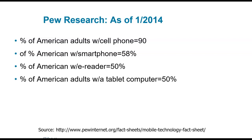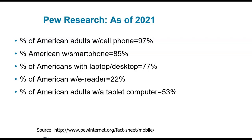Looking at some context: in 2014, most Americans had cell phones but hardly anybody had smartphones compared to now — around 60% of the population. By 2021, almost nine out of ten people have a smartphone, and from our previous discussions we know many people are purchasing with them. Fewer people are using e-readers and tablets, but more people are using smartphones.